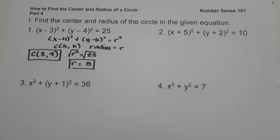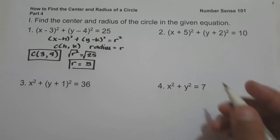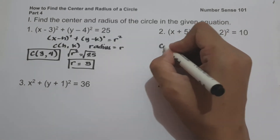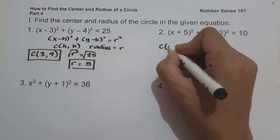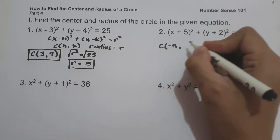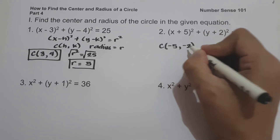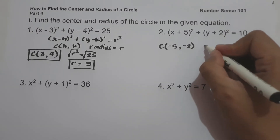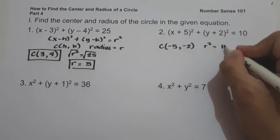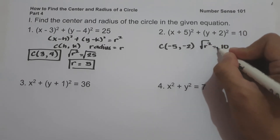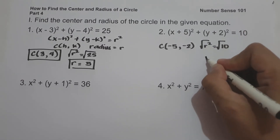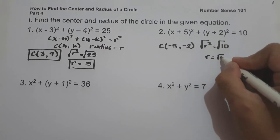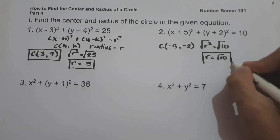On number 2, we have (x plus 5) squared plus (y plus 2) squared equals 10. To find the center, since this is positive 5, we take the opposite and get negative 5, and similarly negative 2. So our center is (negative 5, negative 2). And r squared equals 10. Taking the square root, the radius is square root of 10. And this will be our answer.